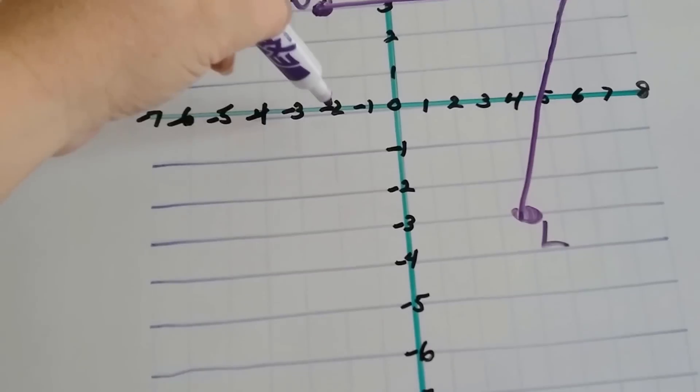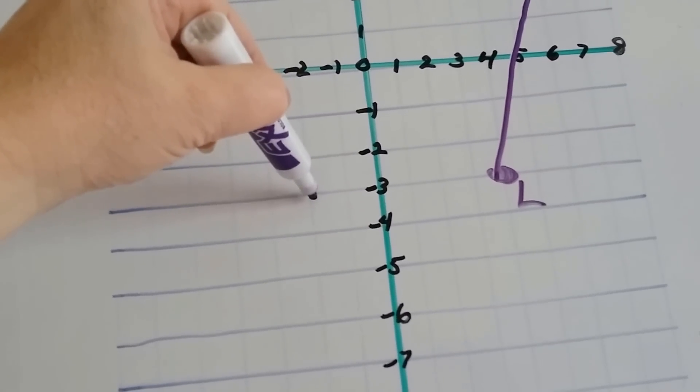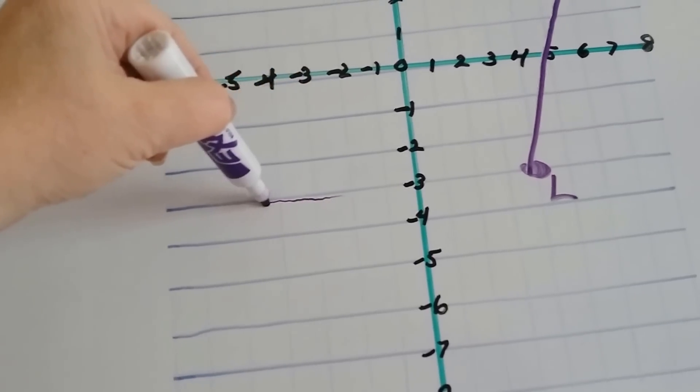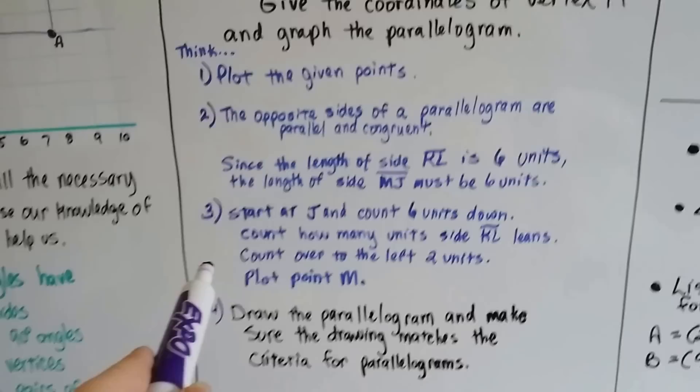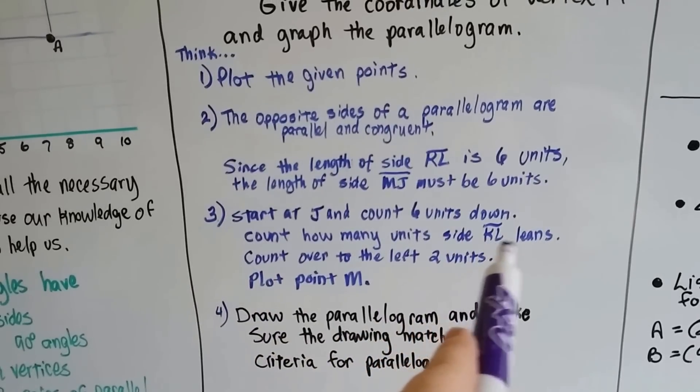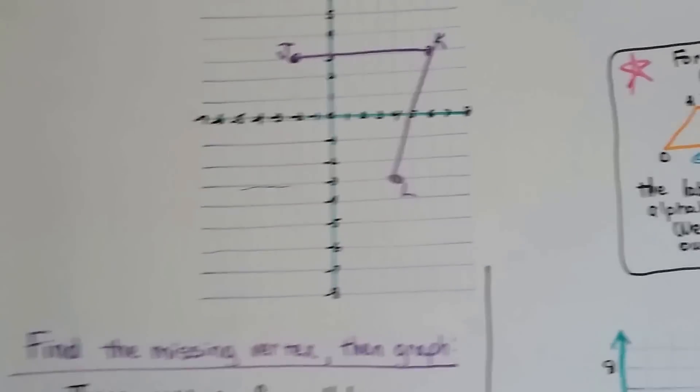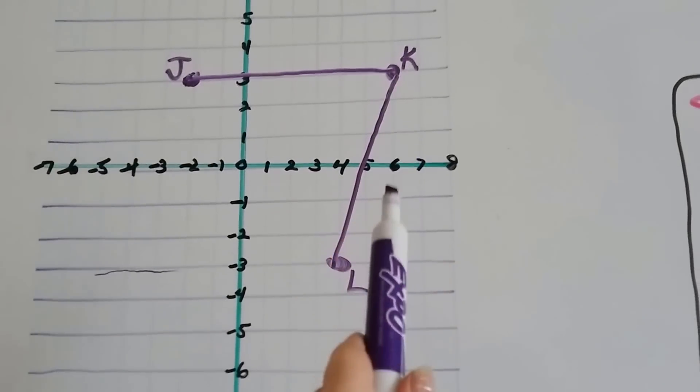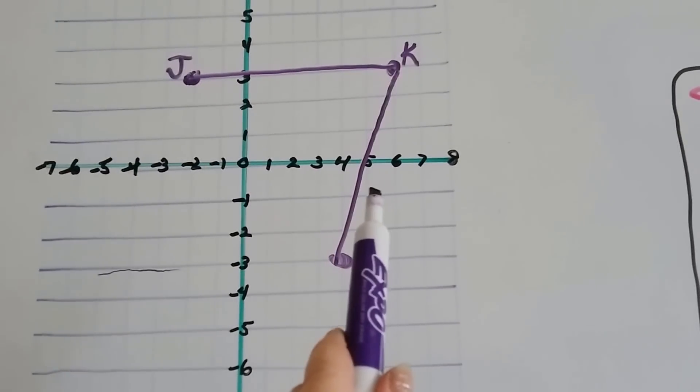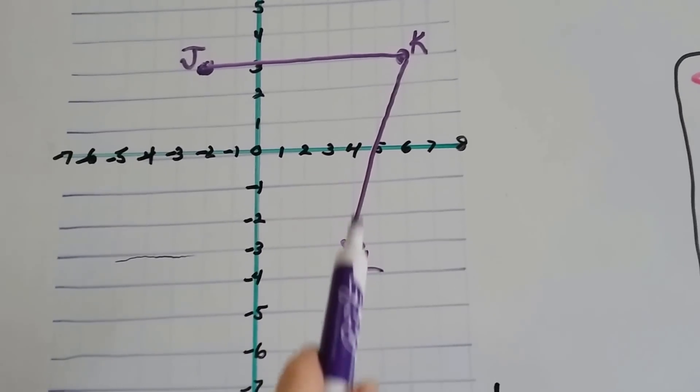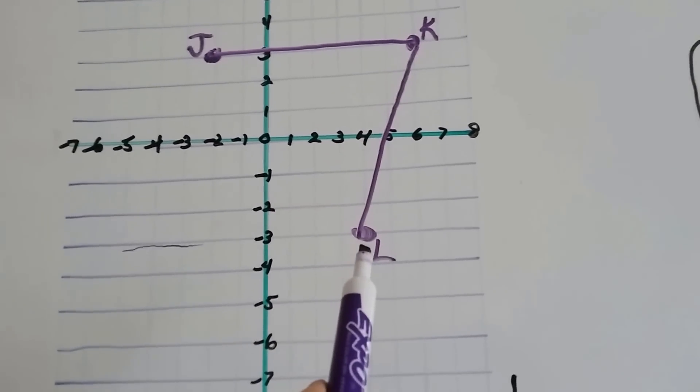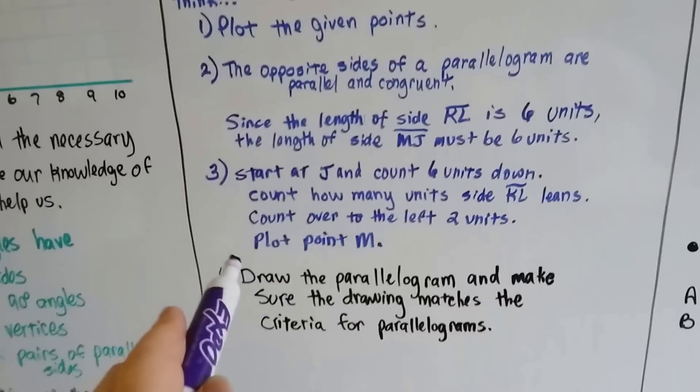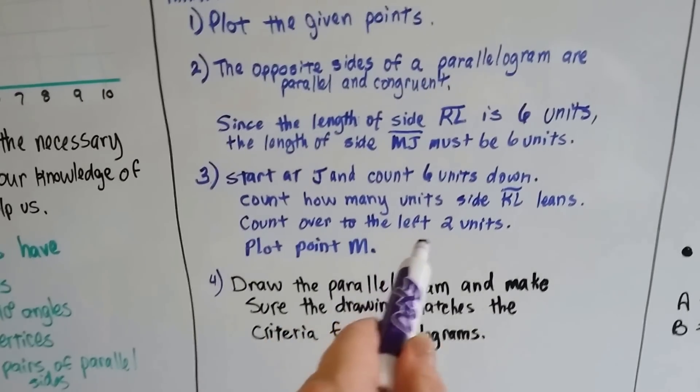1, 2, 3, 4, 5, 6. That puts us at this line right here. Count how many units side KL is leaning. Because it's leaning. So, how many units over is it leaning? So, it's on 6 and it's leaning 1, 2 onto 4. So, it's leaning over 2. So, count over to the left 2 units and plot point M.